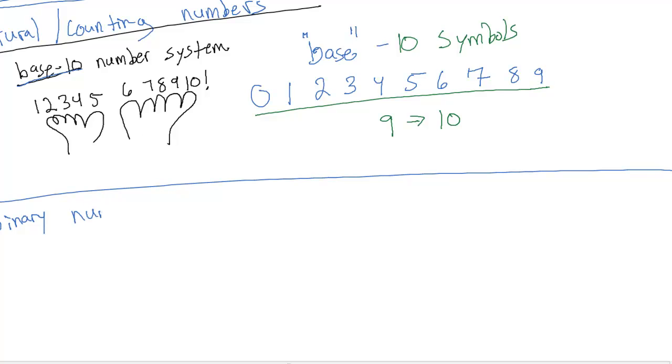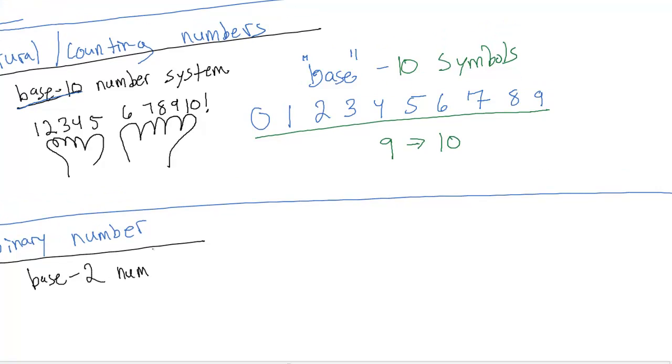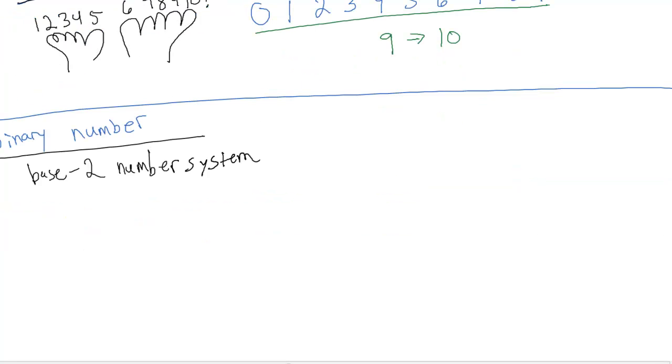So now let's move on to binary numbers. Binary numbers use a base-2 number system. We could describe this in a similar fashion. If we had two fingers, we could count to two.